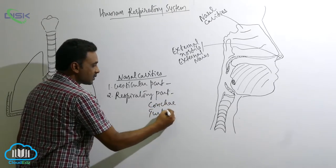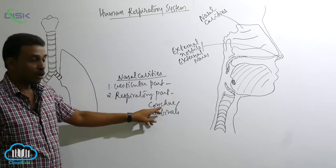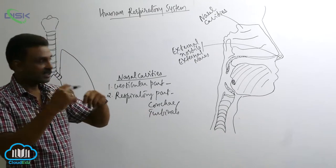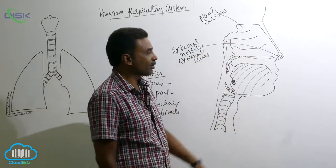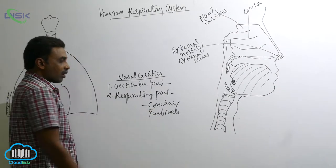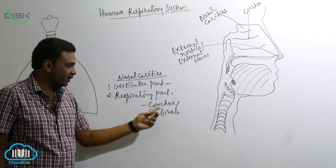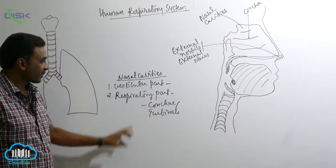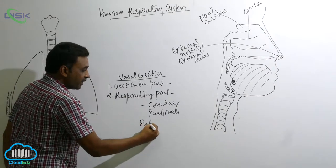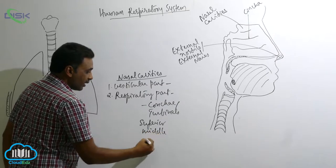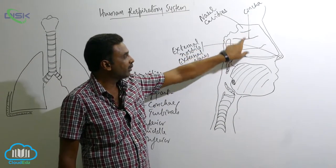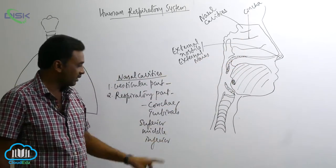The conchae are also called turbinals. Conchae are spirally twisted — like a snail shell. There are three conchae in number: one is the superior concha, another is the middle concha, and the other is the inferior concha. The one at the top is the superior concha, the one at the bottom is the inferior concha, and the one in the middle is the middle concha.